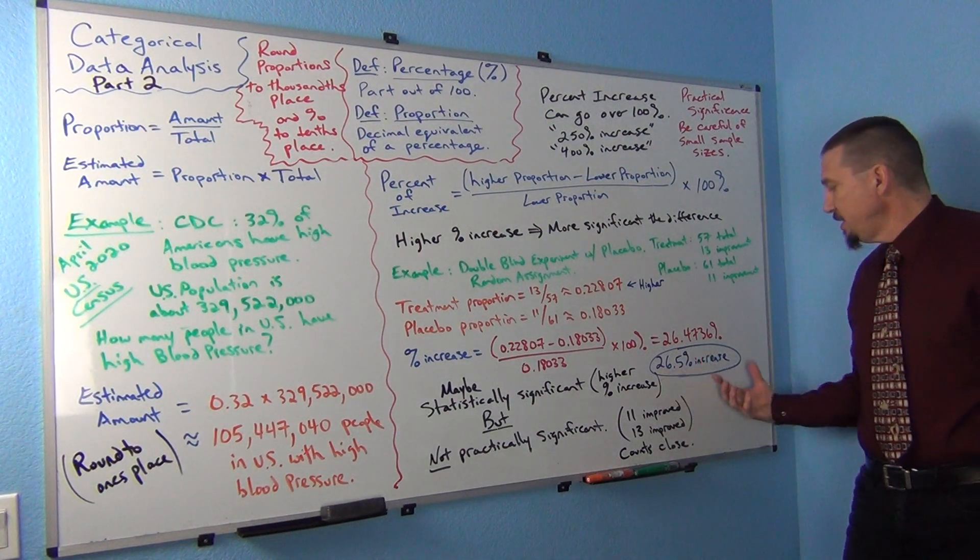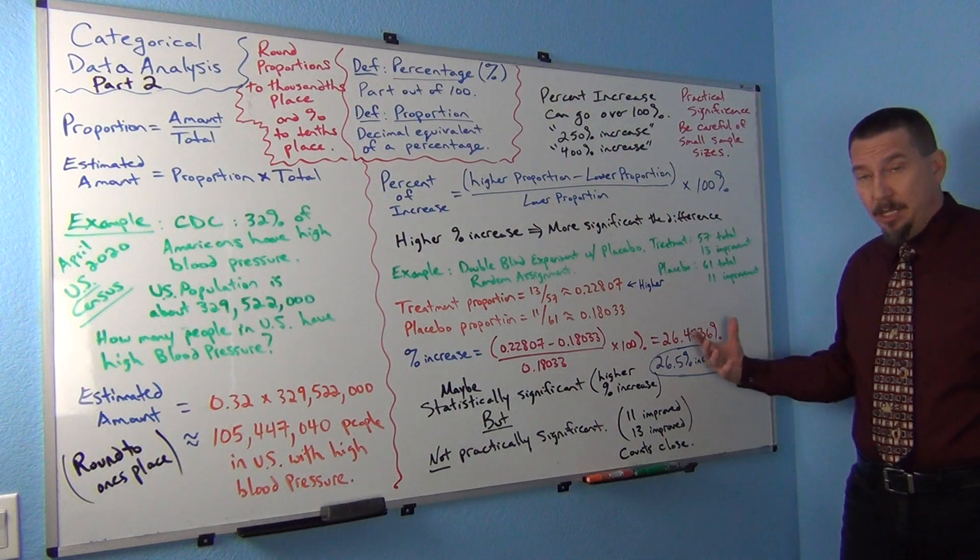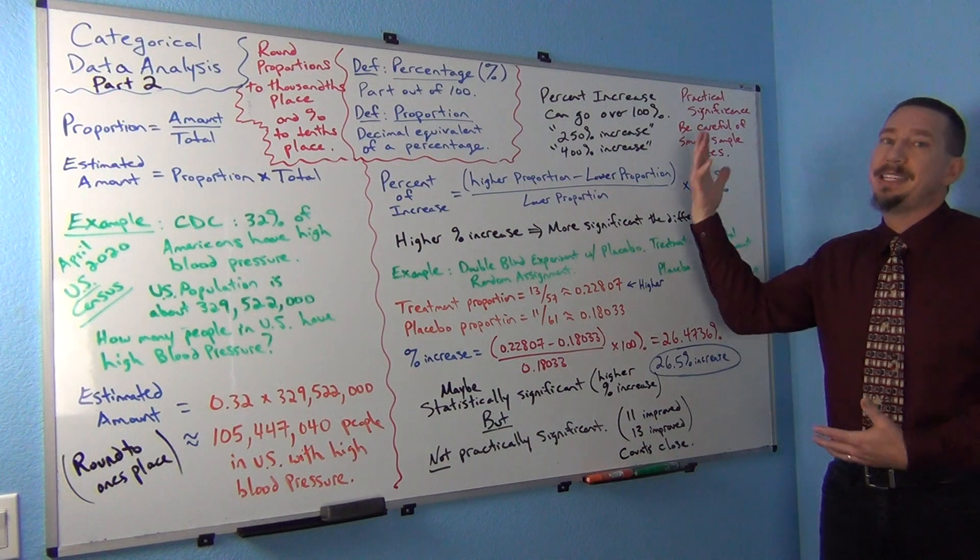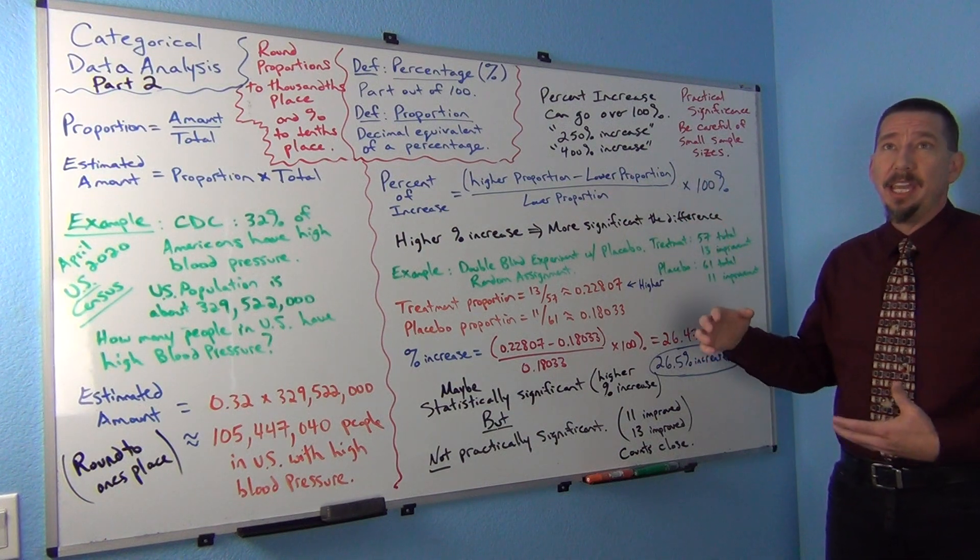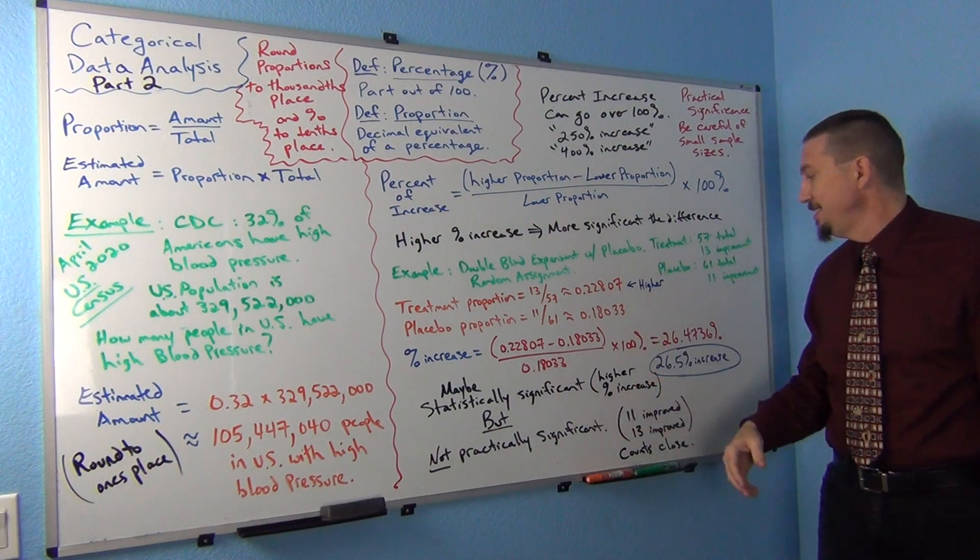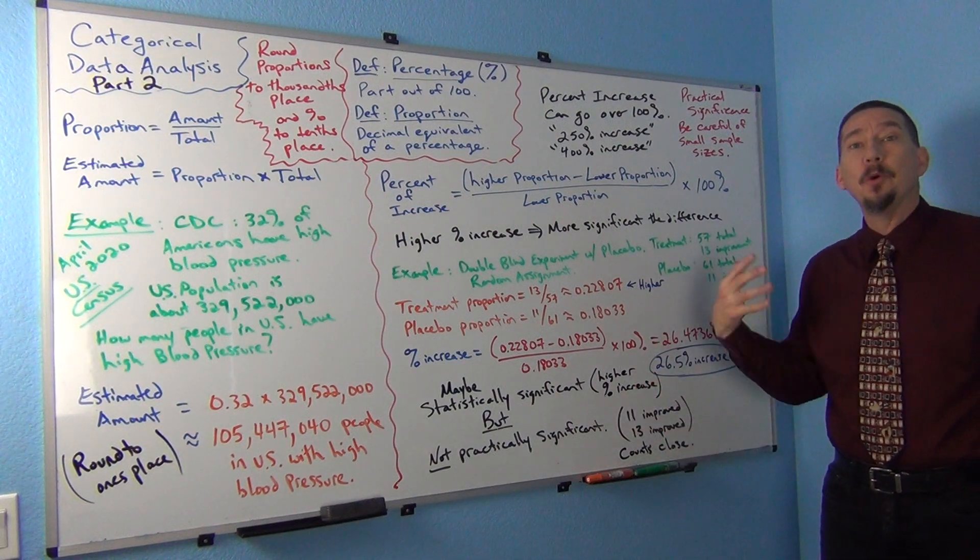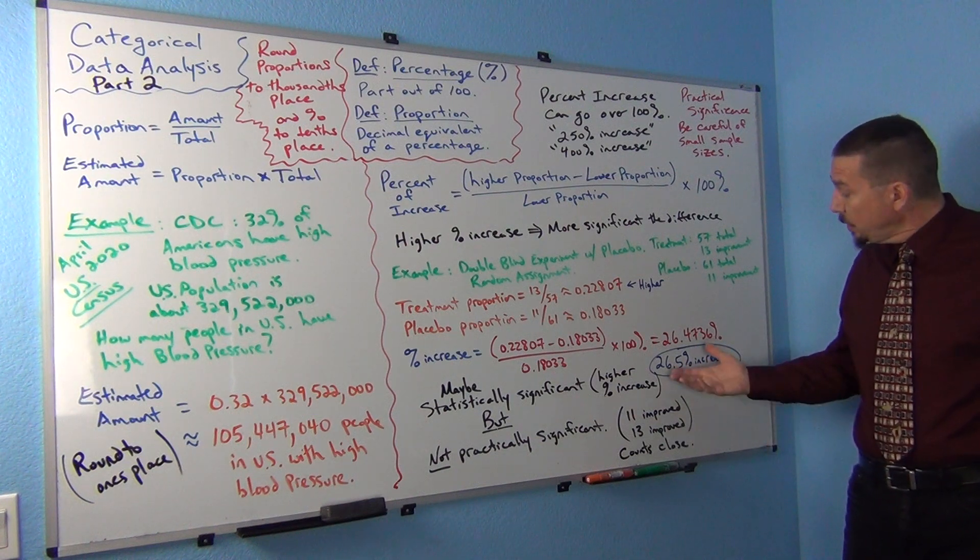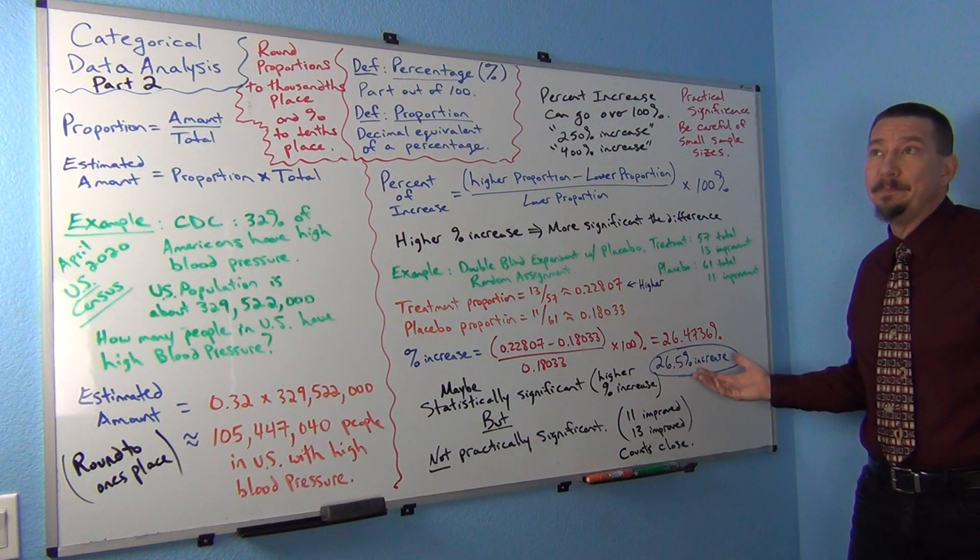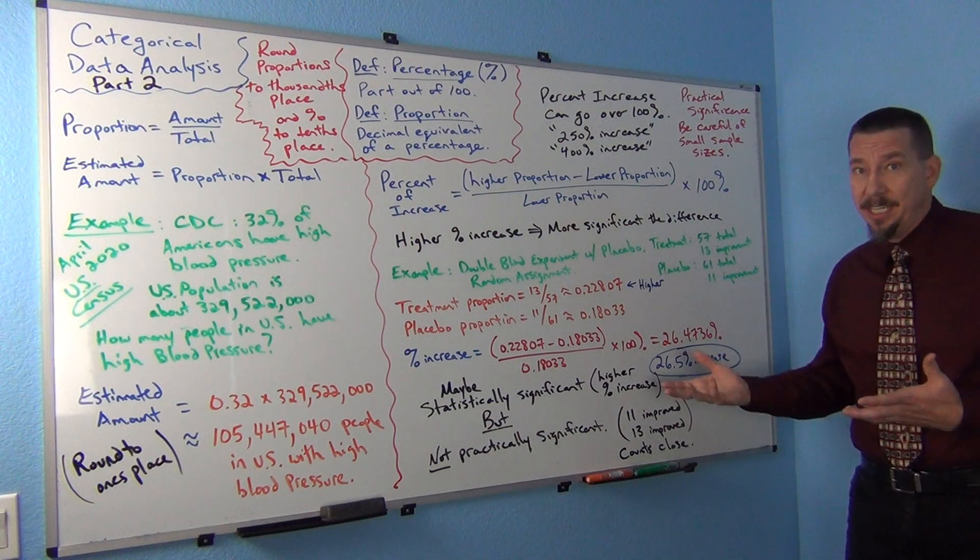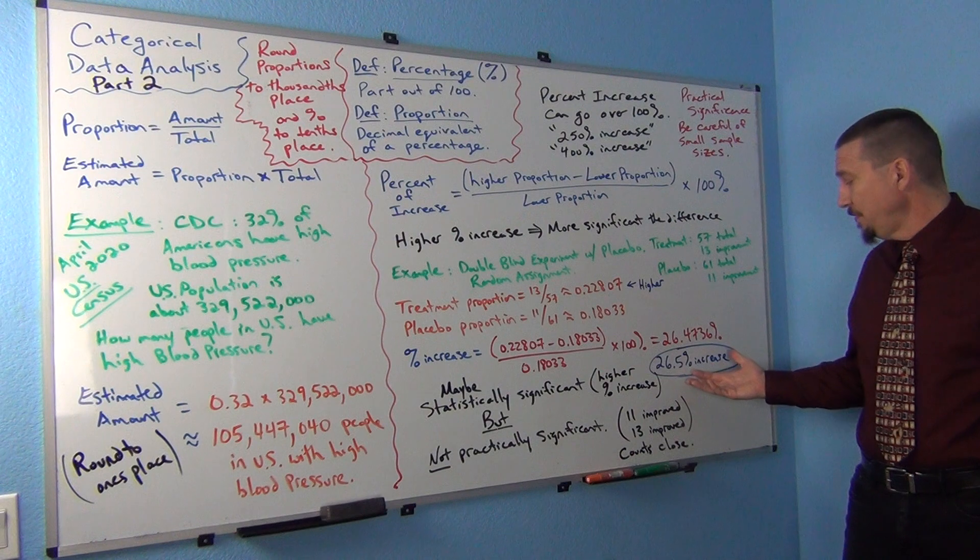So the question is, what does that tell me, right? Well, notice that with the percent of increase, the higher that percent increase gets, the more significant. So if it was a 50% increase, or a 75% increase, or a 100% increase, that would be more significant than 26% increase. Though, 26% increase is not, is a little bit at least. It's not like it was only a 5% increase. It is a 26.5% increase. So we might think, oh, maybe it's statistically significant, because that percent of increase is not, you know, it's not close to zero, right? It's a little bit up from that. I would kind of prefer it if it was higher, though.